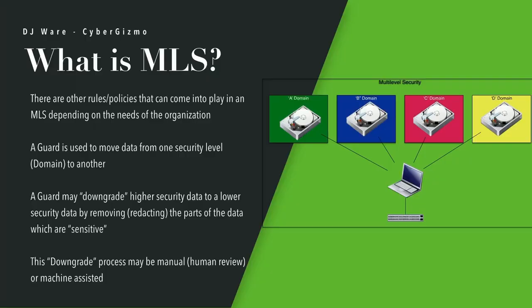This downgrade process can be manual — that is, it can be a human review. For example, if I'm moving something from the B domain to the A domain, I would push that file to a folder the human reviewer has access to and notify that reviewer that there's a document for them to review. They would then manually redact the portions of the document they didn't want distributed to the A domain. You have to have very well-trained people involved to make sure the appropriate data is released and avoid accidental leakage of information from the higher side of the network.